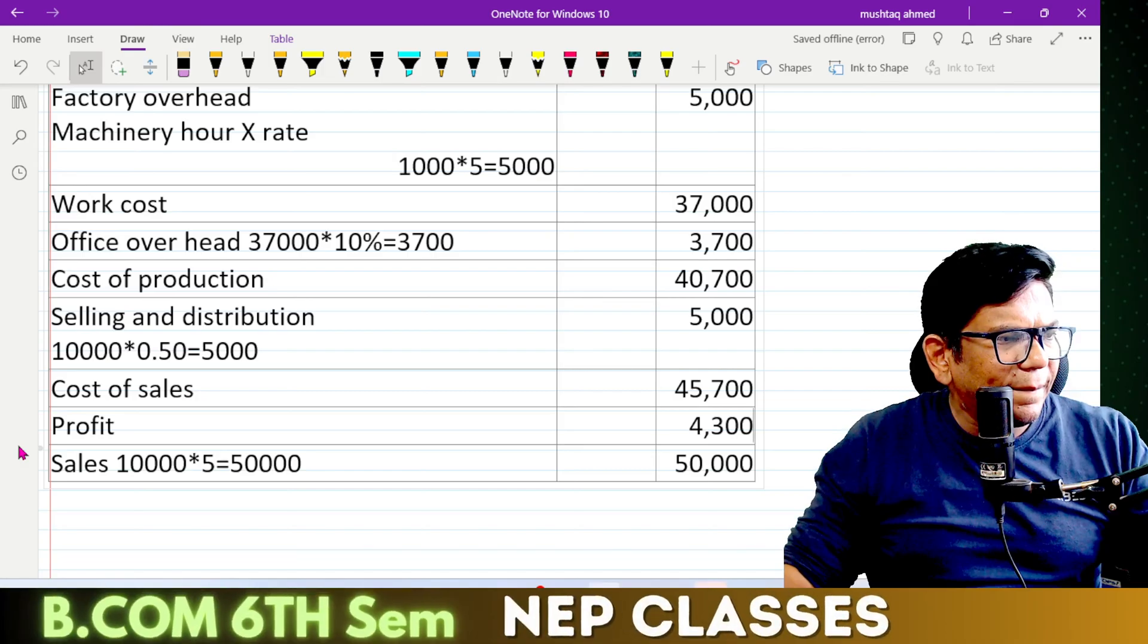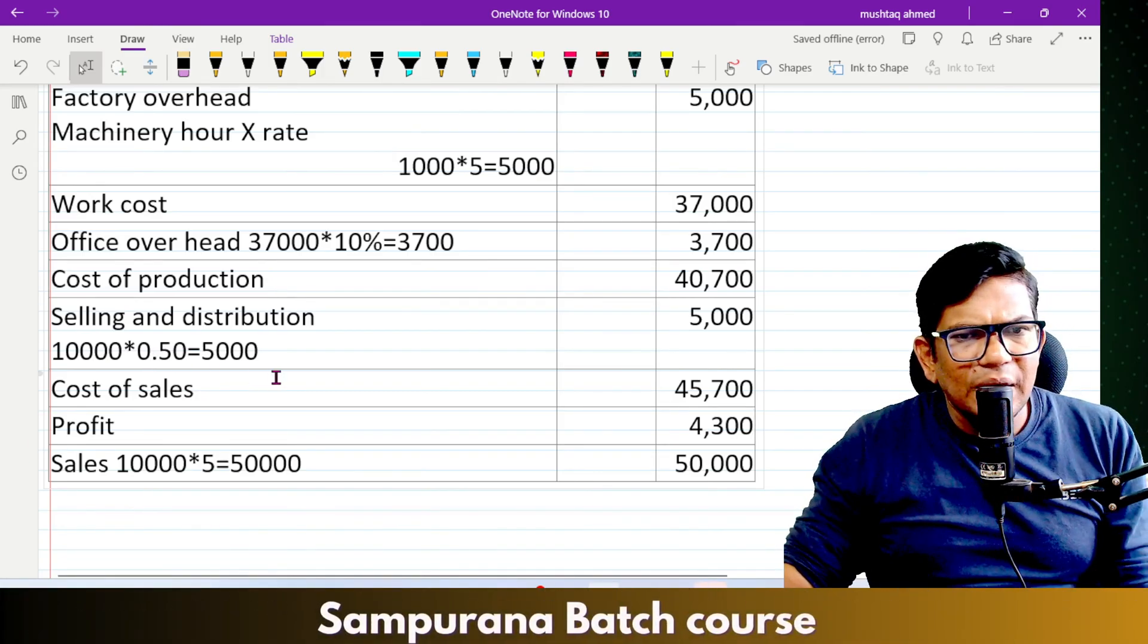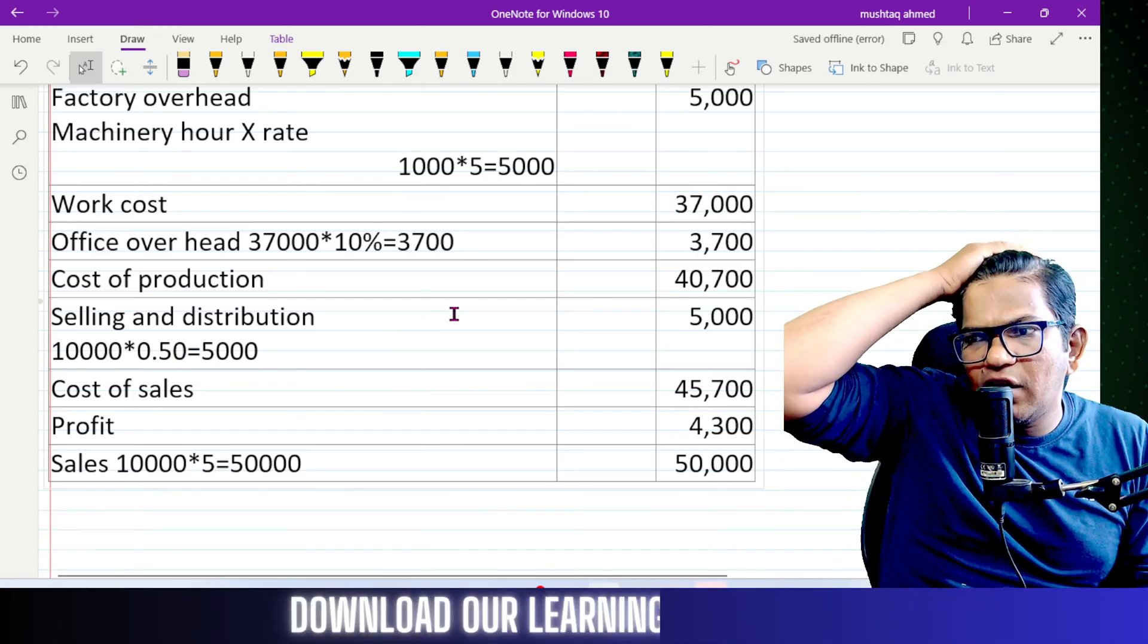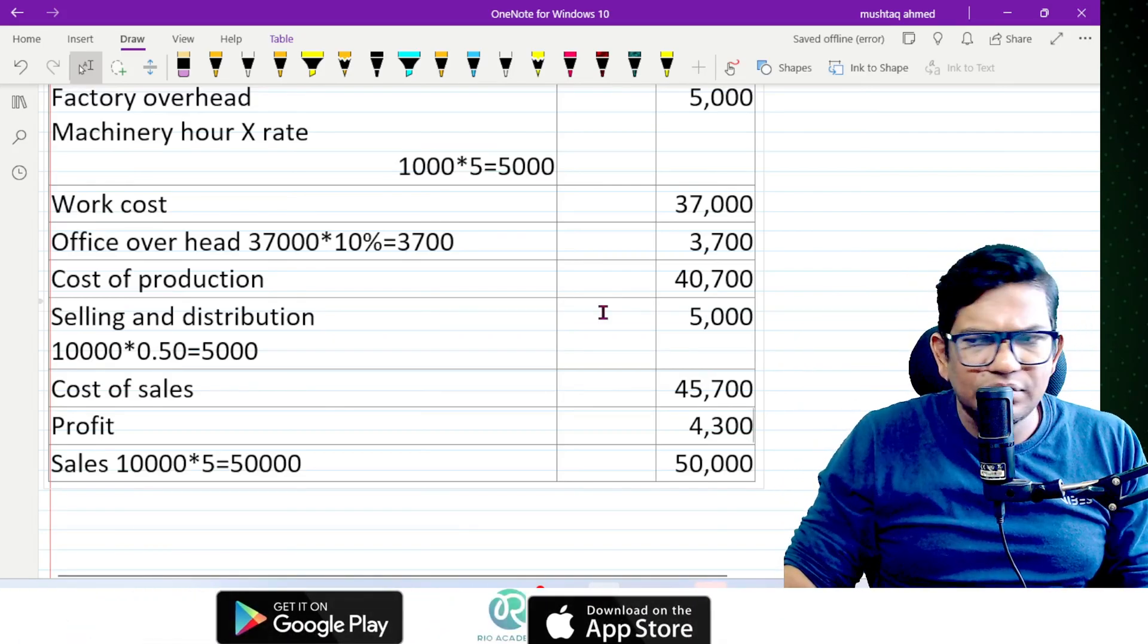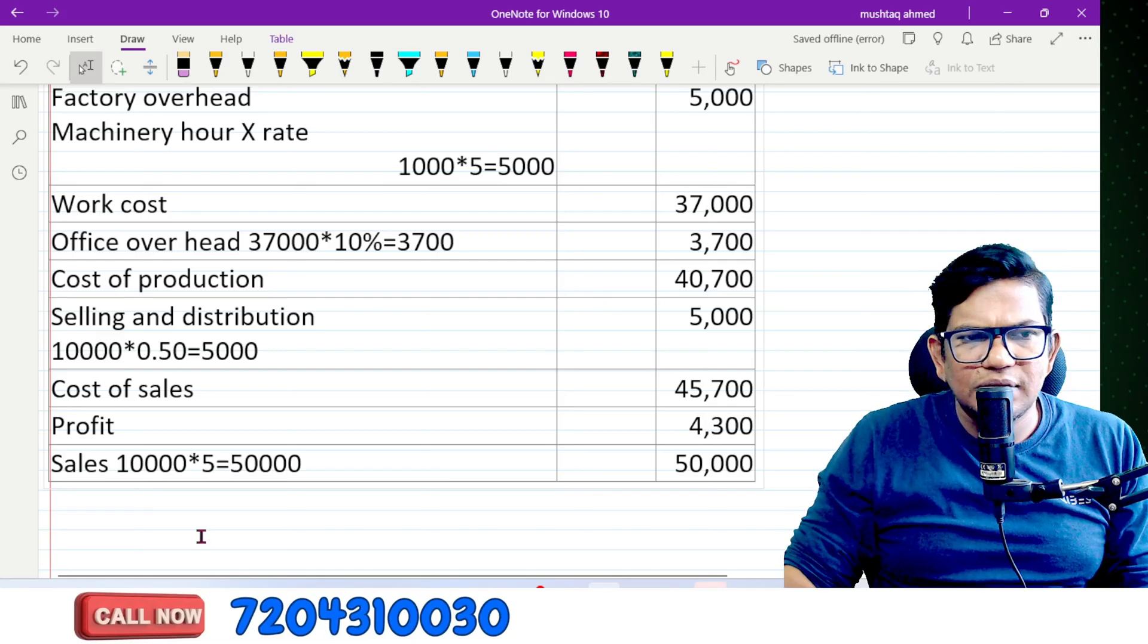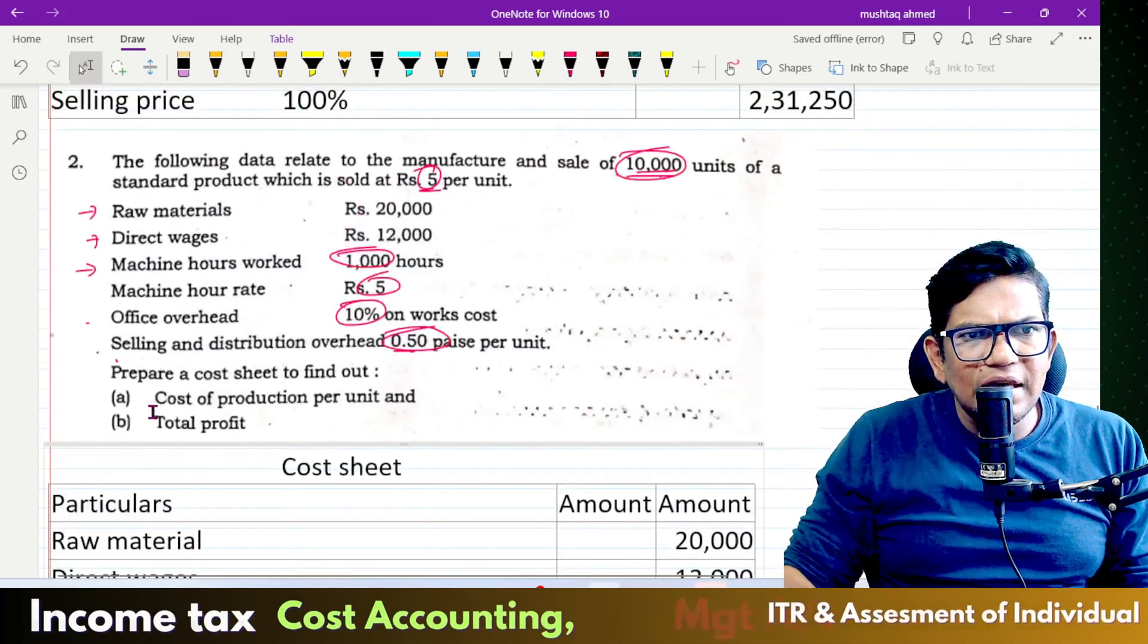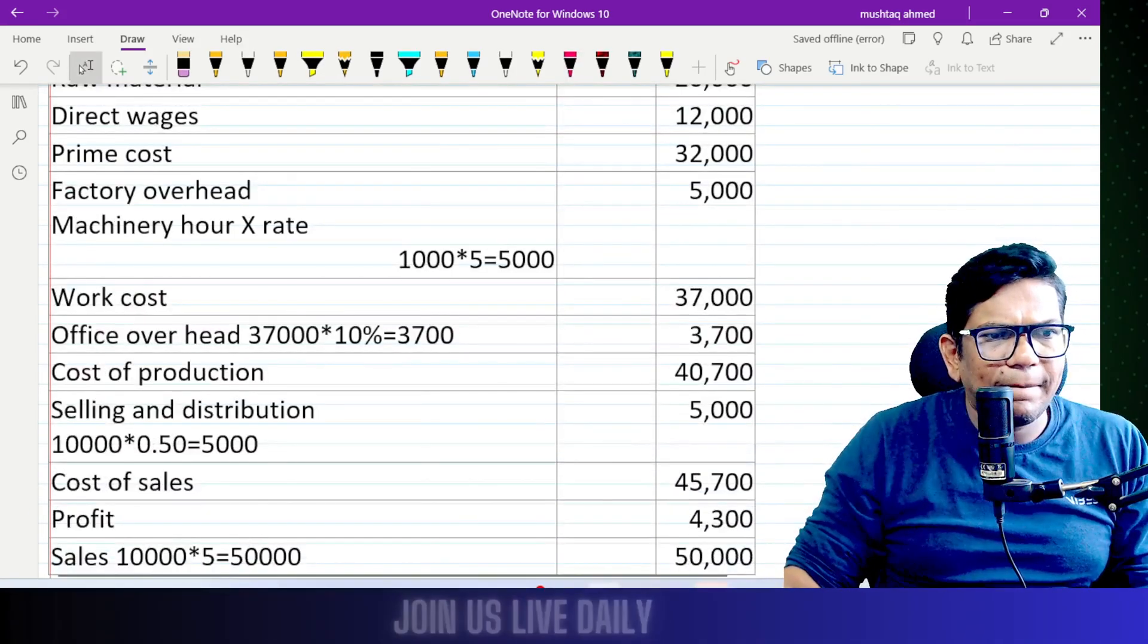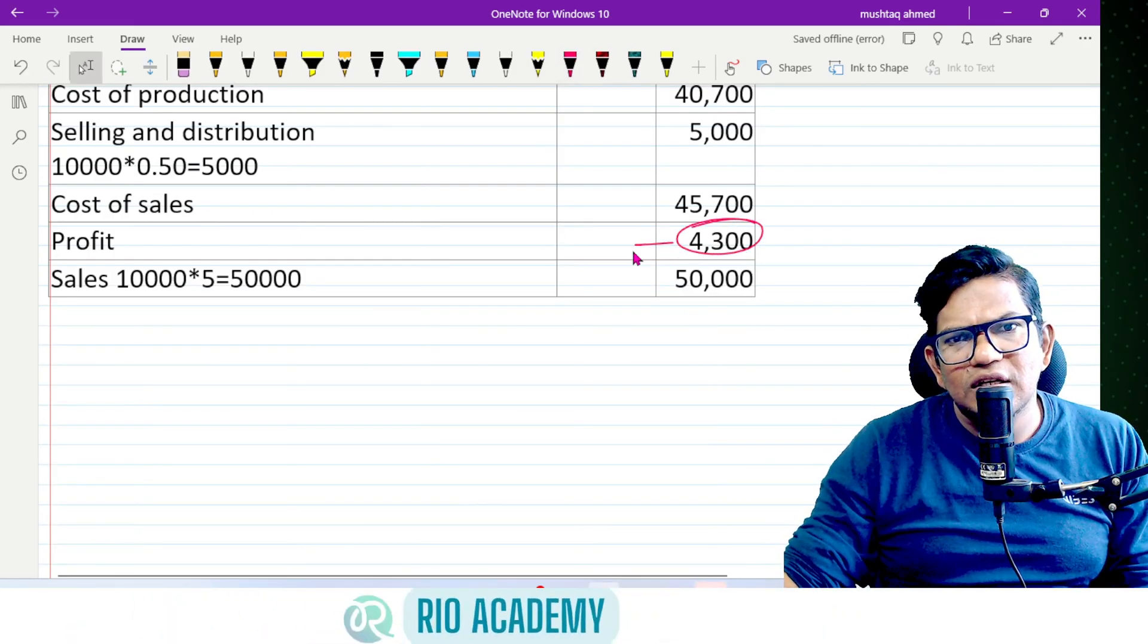This is the complete cost sheet. We covered contract costing and operating costing. This is a five-mark question. Total profit